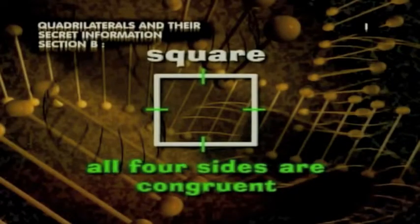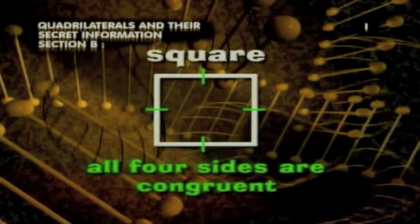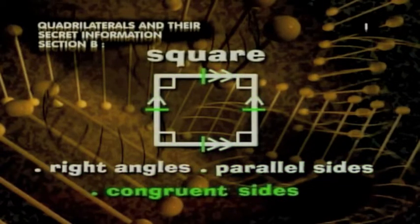A square is a rectangle whose four sides are congruent. So a square has right angles, parallel sides, and congruent sides.